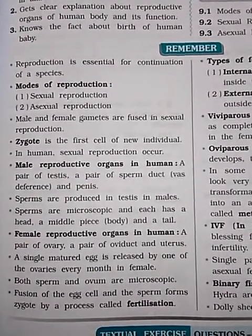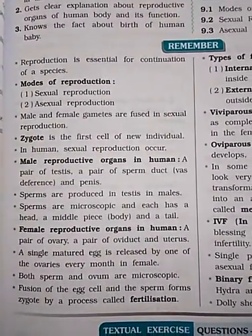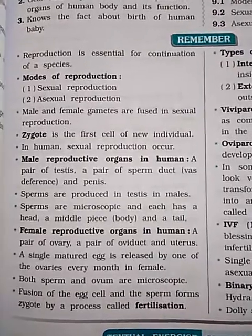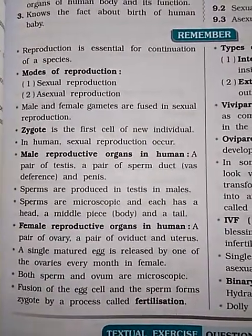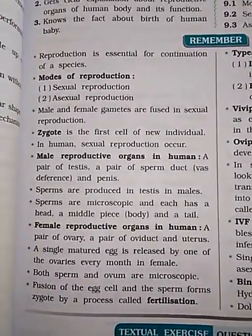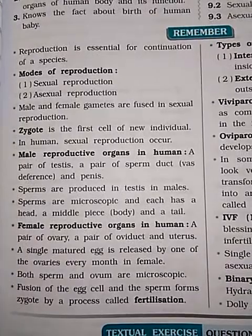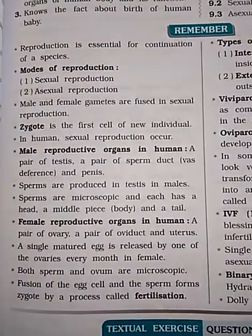Mode of reproduction: there are two modes of reproduction — sexual reproduction and asexual reproduction.